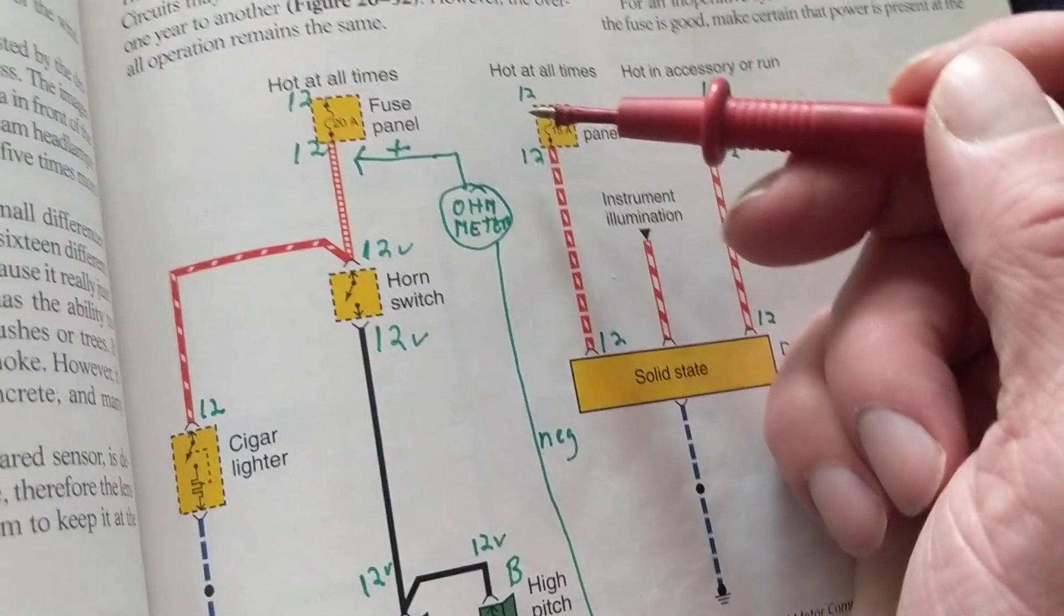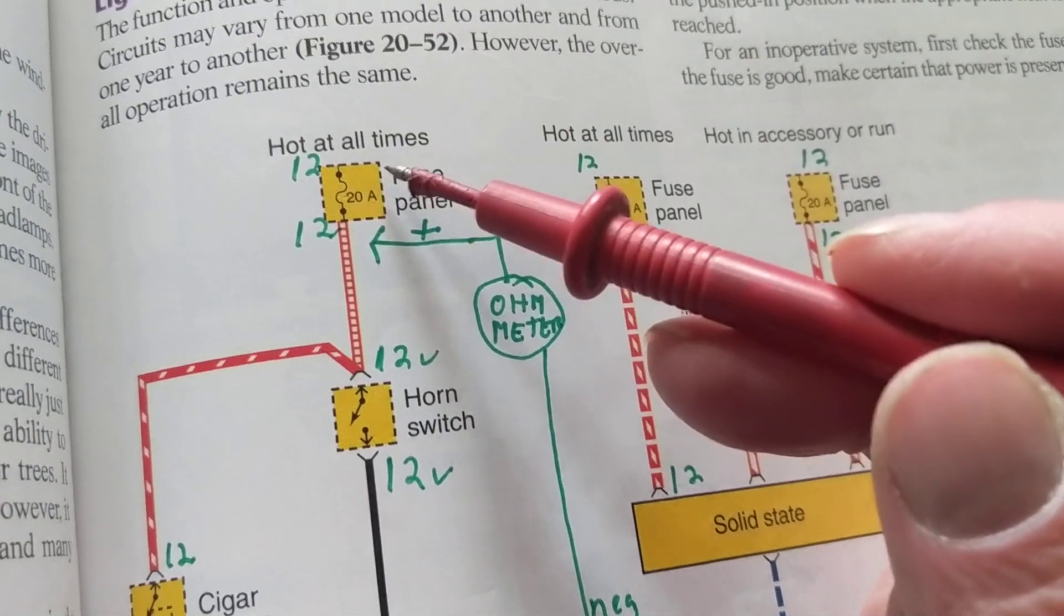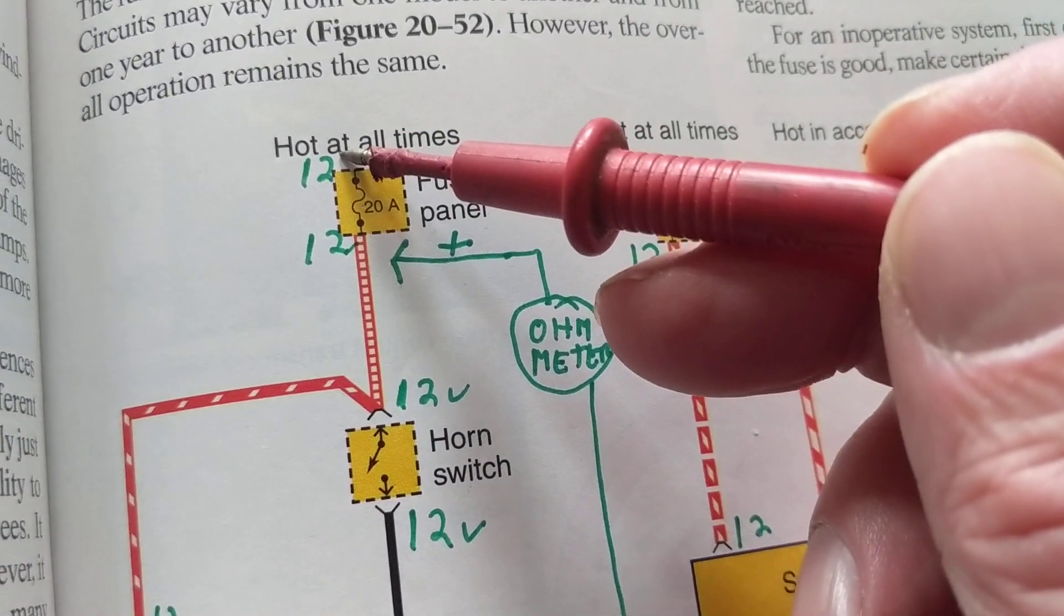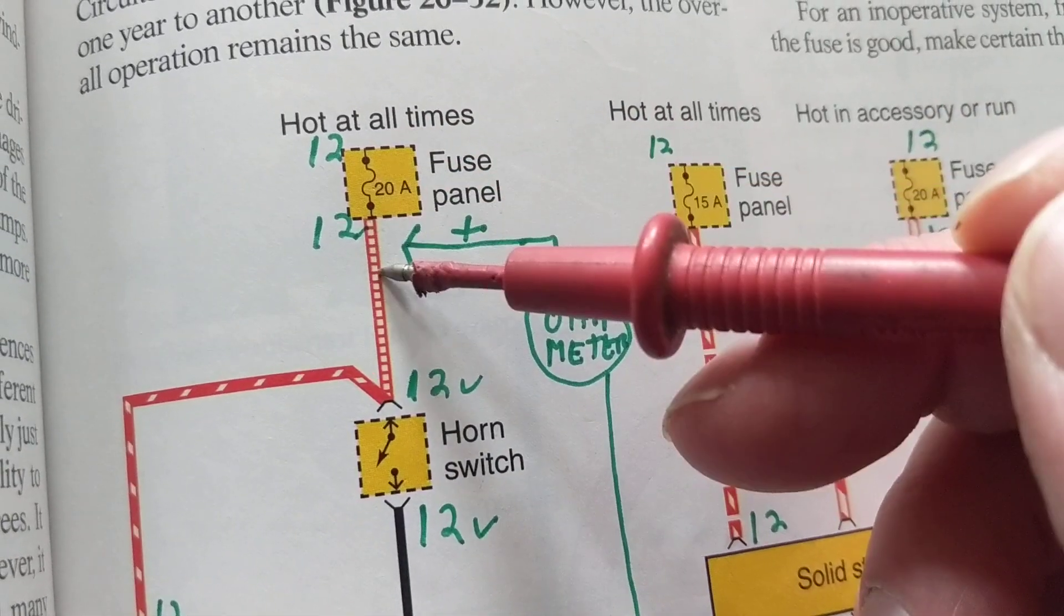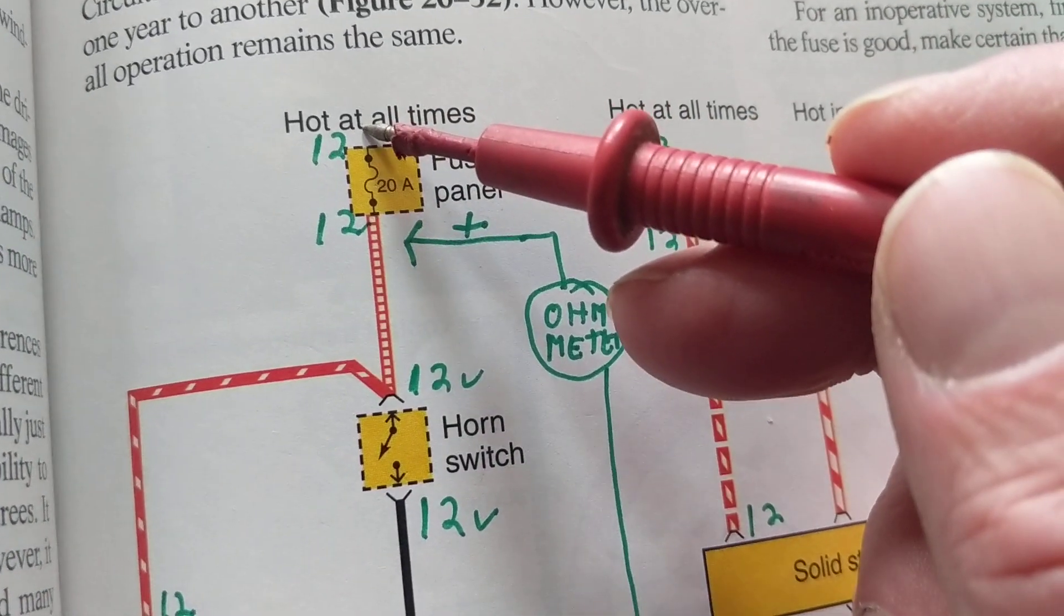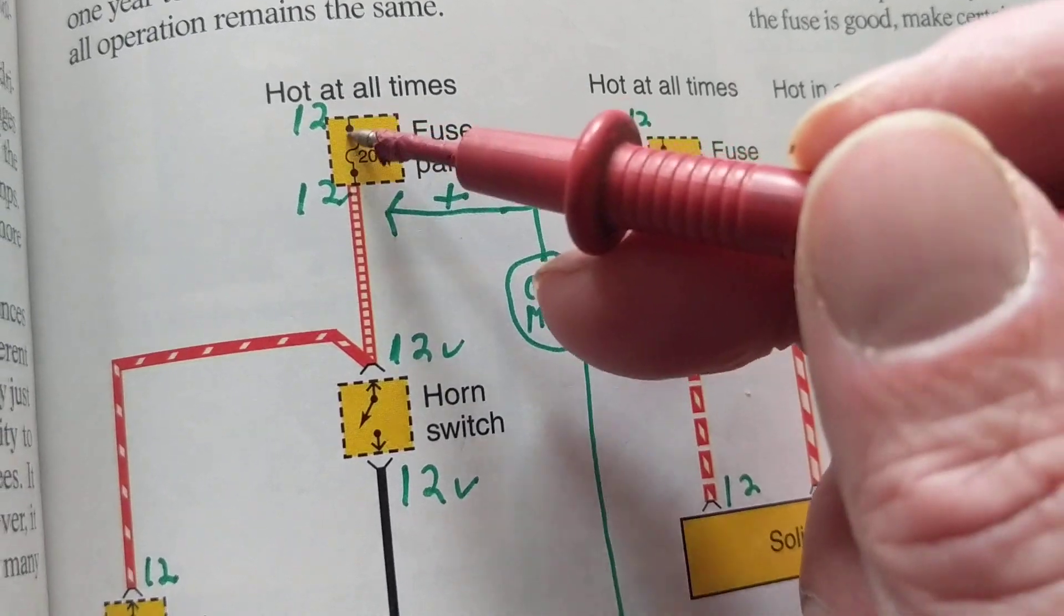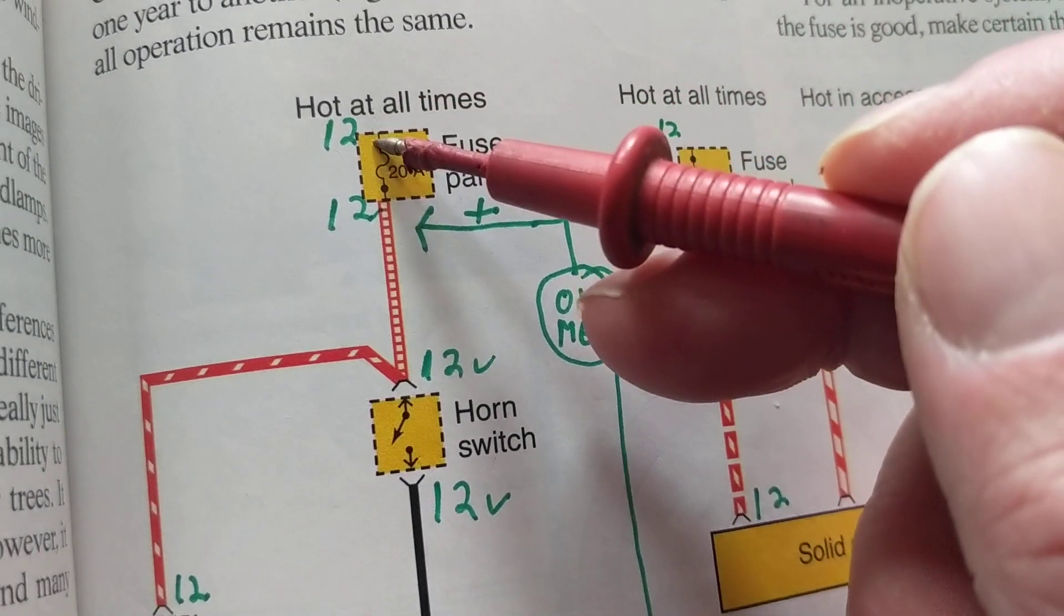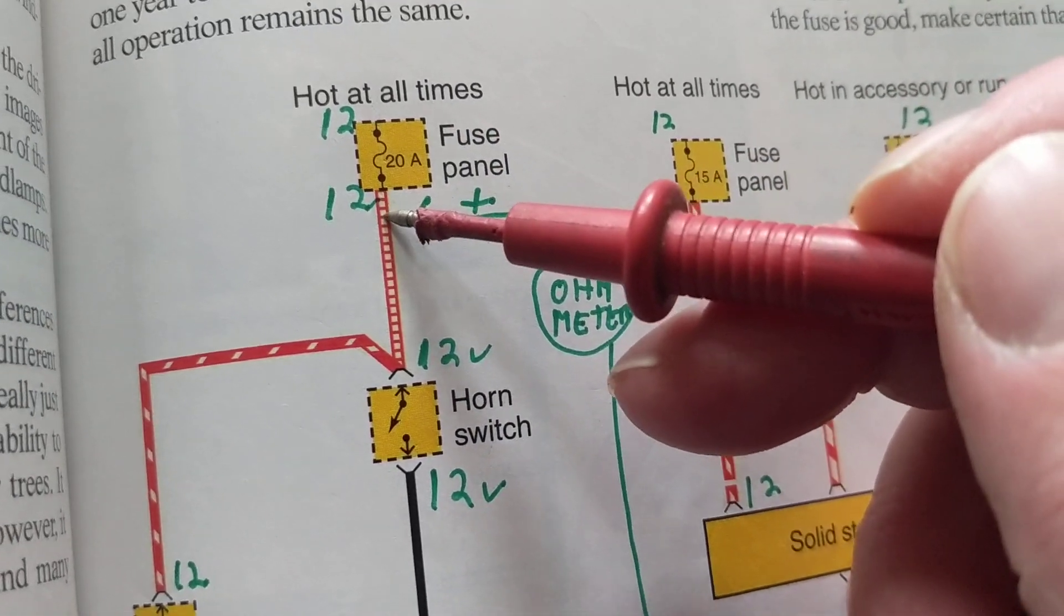Now the problem over here is the fuse keeps on blowing. On a good fuse you'll measure 12 volts on one side, 12 volts after the fuse or on both sides. On a blown fuse one side will be 12 volts, the other side will be zero, and that's because this is blown. This is an open circuit. It's not connected anymore to B+. If you have no connection you're not going to measure 12 volts, you're going to measure zero volts.